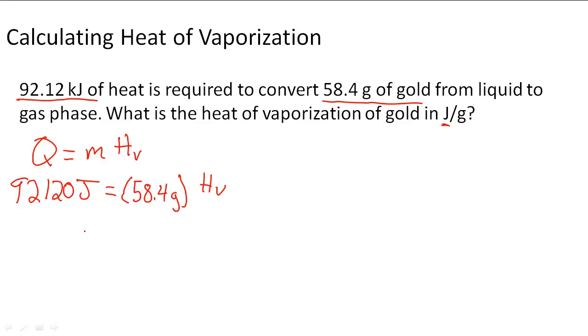To solve for heat of vaporization, we're just going to divide 92,120 joules by 58.4 grams, and then we're going to get joules per gram and the heat of vaporization.